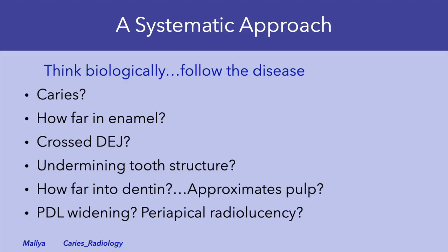Developing a systematic approach to caries diagnosis: think biologically and follow the pattern of the disease. Identify the lesion, determine its extent into enamel and dentin, assess the amount of tooth structure that has been undermined, and assess whether the caries has approximated the pulp. Beyond the caries lesion itself, think of its consequences — pulpal and periapical inflammation. Periapical inflammation will be manifested on radiographs as widening of the periodontal ligament or a periapical radiolucency. Assessment of the periapical region should follow every caries assessment.